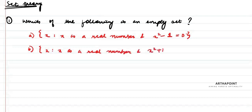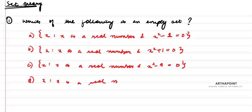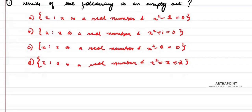c) {x: x is a real number and x² - 9 = 0}, and d) {x: x is a real number and x² = x + 2}. Just try this question once, then we will see what should be the answer for this one.